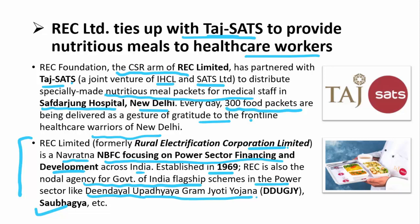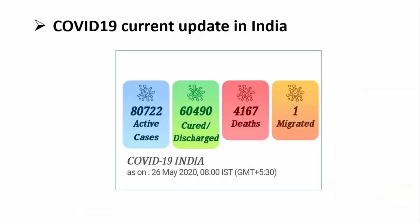For today's COVID-19 update in India as of 26th May: total active cases have reached 80,722; the number of cured patients has crossed 60,000, which is very positive, with a recovery rate above 41%. Unfortunately, the number of deaths has increased to 4,167.